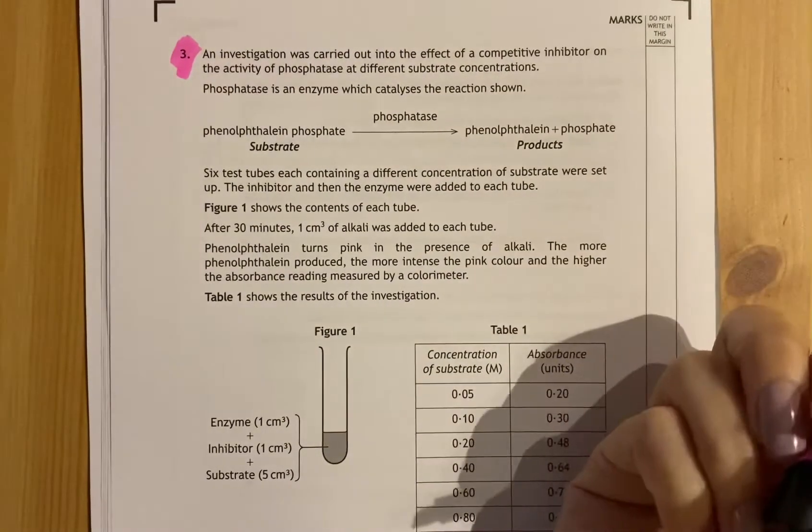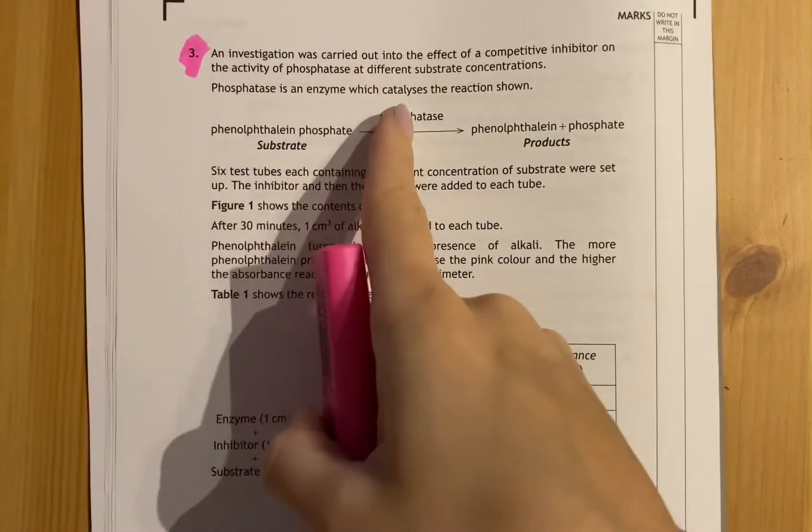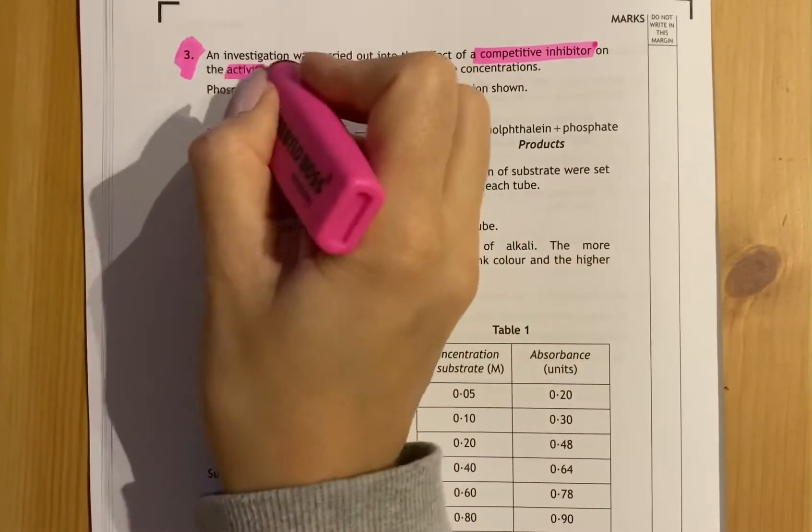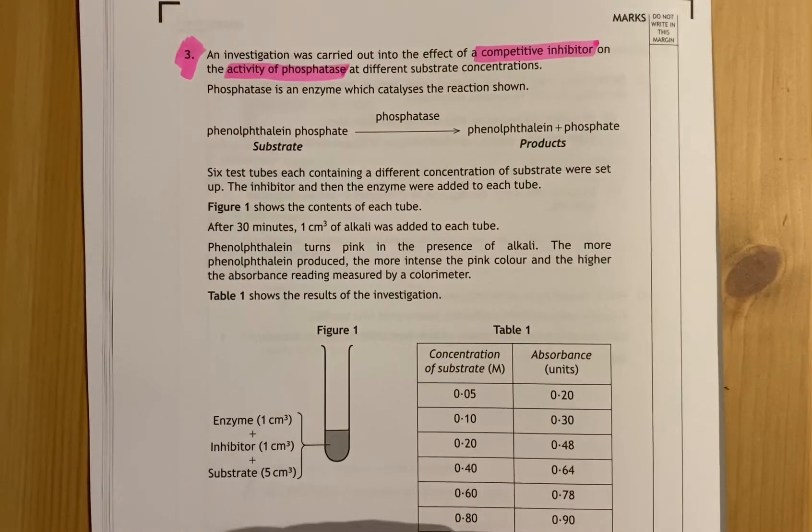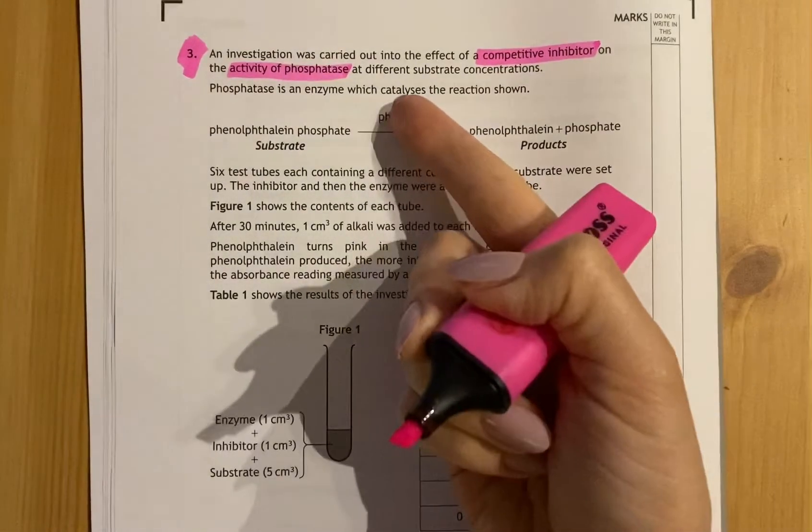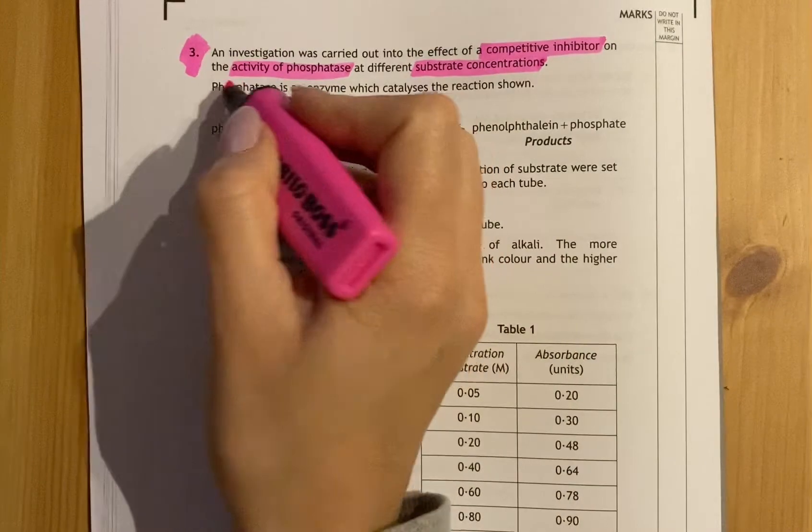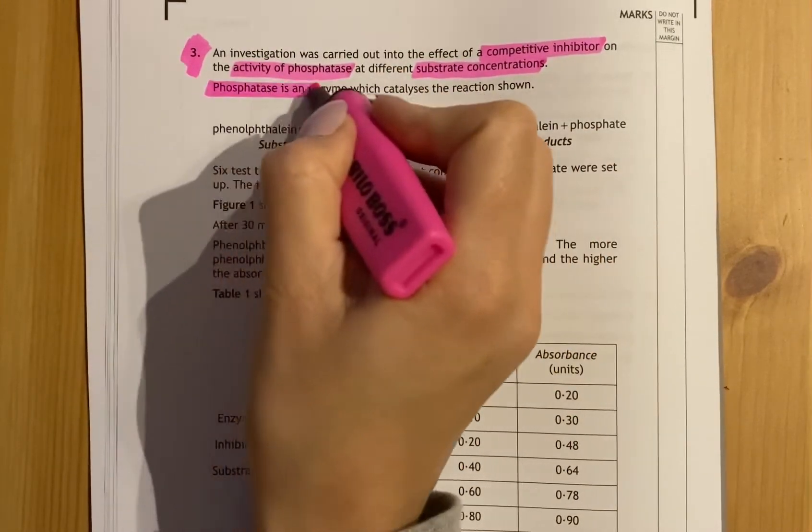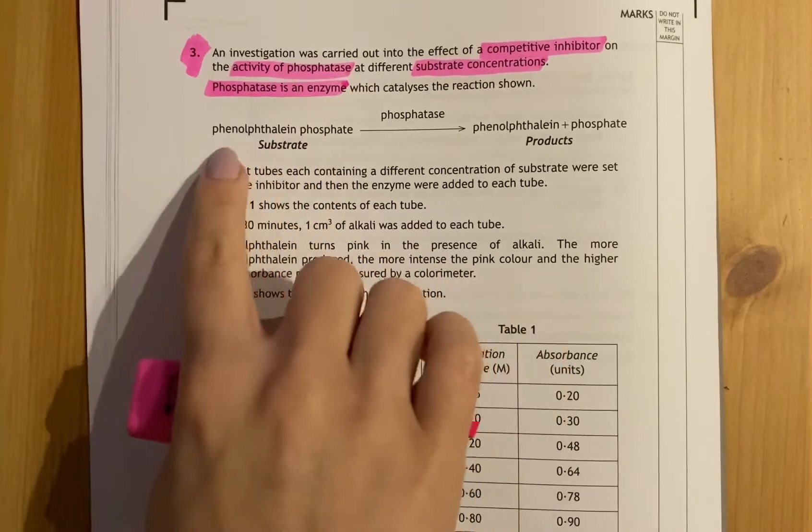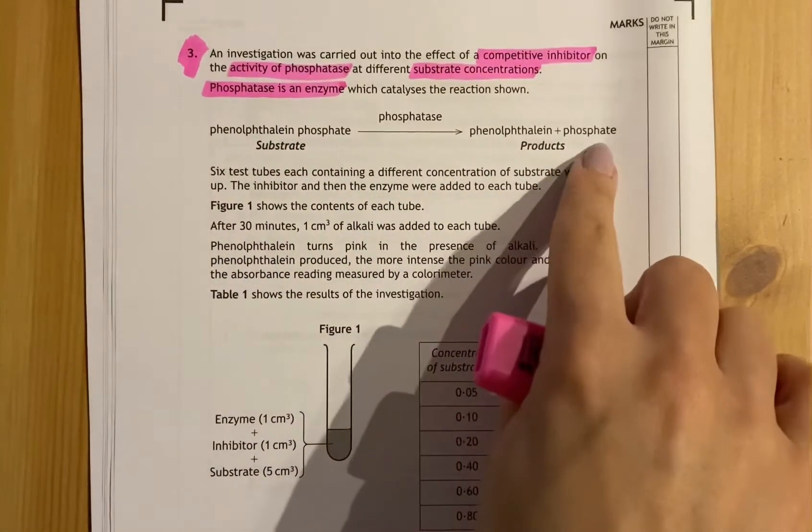So highlight the key things. An investigation was carried out into the effect of a competitive inhibitor on the activity of phosphatase. The phosphatase is an enzyme at different substrate concentrations. Phosphatase is an enzyme which catalyzes the reaction below.